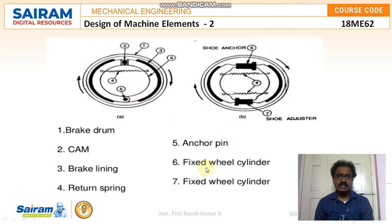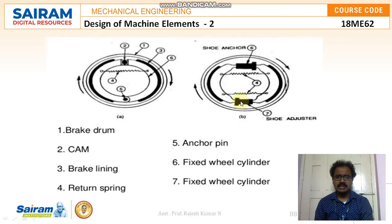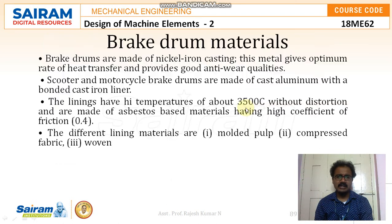Number six is the fixed wheel cylinder, which is common in both internal and external expanding types. Number seven is the shoe adjuster. The internal and external designs look almost similar, but in the case of the external expanding brake, there will be two return springs, and the shoe adjuster arrangement differs from the internal expanding type.